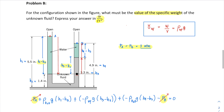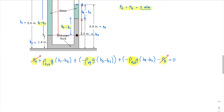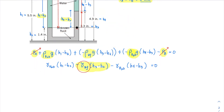The specific weight is given by density times acceleration due to gravity, so each density-times-g term can be expressed as a specific weight. This term becomes the specific weight of water times (h1 minus h2); this term becomes negative specific weight of unknown fluid (uf) times (h3 minus h2); and this term becomes negative specific weight of water times (h4 minus h3). Notice that the unknown fluid term is negative, so I will transpose it.